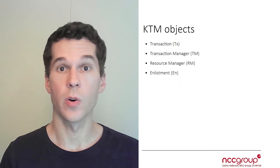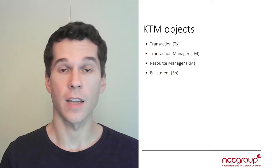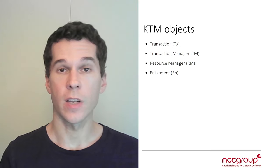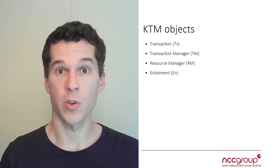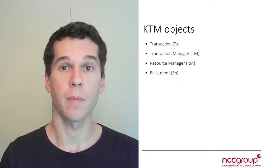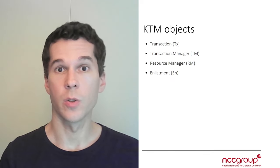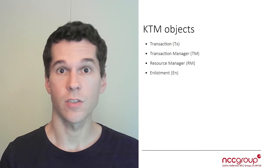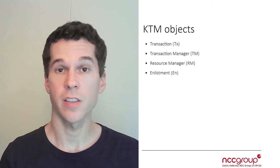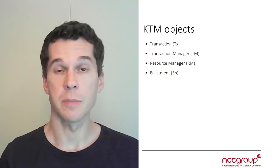In this part, we're going to look into the different KTM objects we can allocate into the kernel. We're going to look into how we can do that from userland by calling certain KTM-related APIs. We're going to look into creating transactions, transaction managers, resource managers, and enlistments.